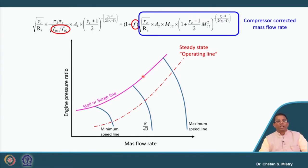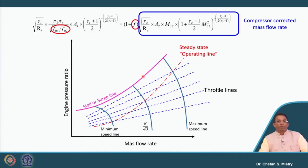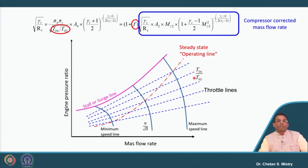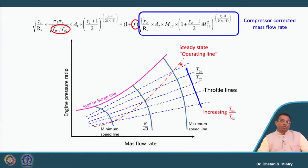Looking at the throttle lines on the compressor map: these lines are defined as throttle lines, which represent the temperature ratio — turbine entry temperature divided by compressor entry temperature. Increasing values of this ratio are shown on the map. These are known as throttle lines.